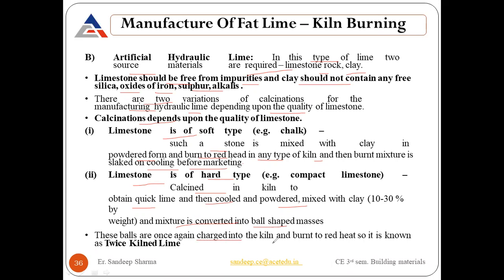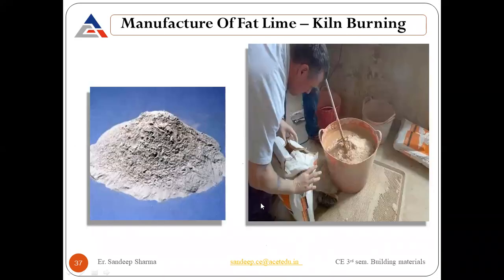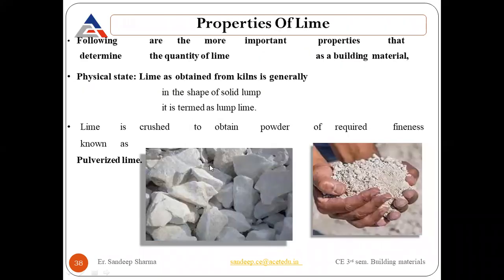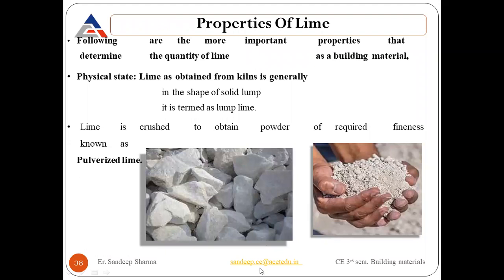These two calcination methods are used in the case of artificial hydraulic lime. These balls are once again charged into the kiln and burned to red heat — this is known as twice-burned lime. When we add water we get slaked lime.